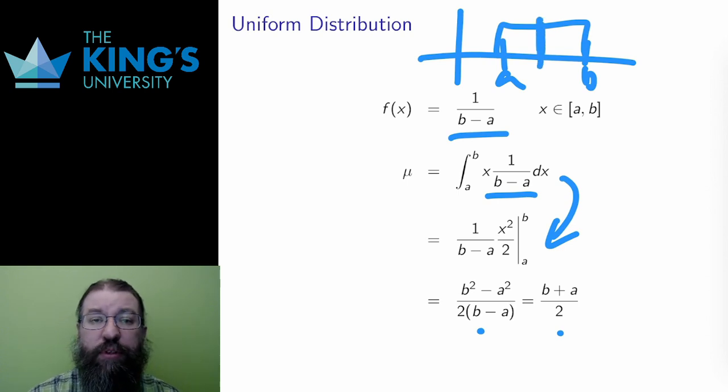And this makes good sense. (a + b) / 2 is exactly halfway between a and b. The distribution is uniform. It's the same everywhere. So the average is exactly the middle.